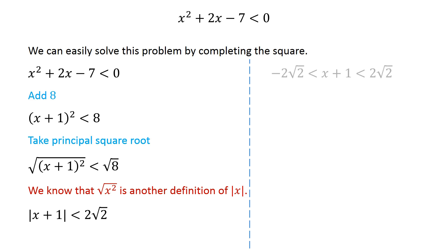This implies that the quantity x plus 1 lies between negative 2 times square root of 2, and 2 times square root of 2.